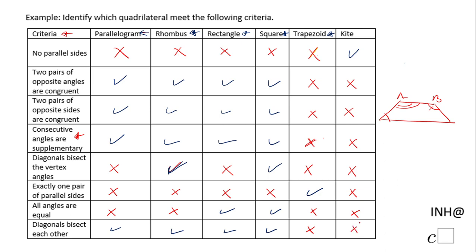For the trapezoid and kite, many properties do not work. I usually suggest drawing a picture to help you remember. For a kite, draw the shape where two consecutive sides are congruent on one pair and two consecutive sides are congruent on the other pair. If you enjoyed this clip, don't forget to click the like button and come back to C-Squared for more help. Thank you.